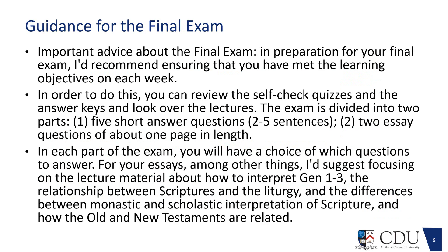Guidance for the final exam: look at the learning objectives for each week. Make sure that you know the self-check quizzes and look at the answer keys. Look over the lectures. You've got two parts: five short answer questions — two to five sentences each — and then two essay questions, about one page in length. You have the choice of which questions to answer. However, given how we're closing up with Genesis 1 through 3, that's not what you want to skip in terms of reading. Make sure that you've done your Ratzinger homework. I'll prepare some study guides in that area and have those out later this week.